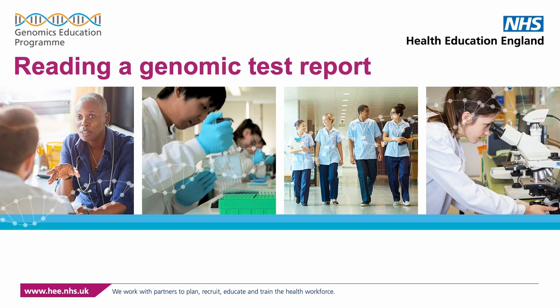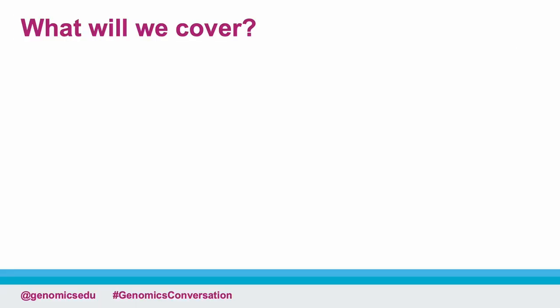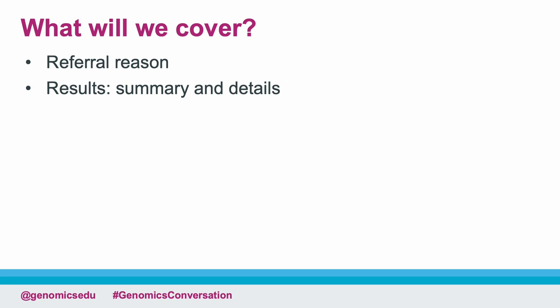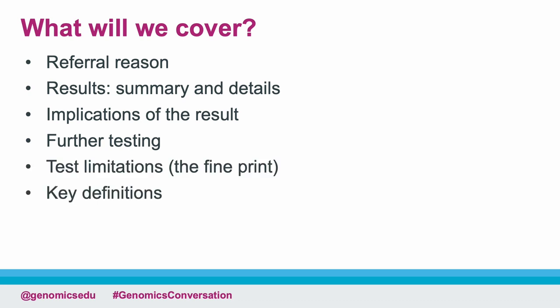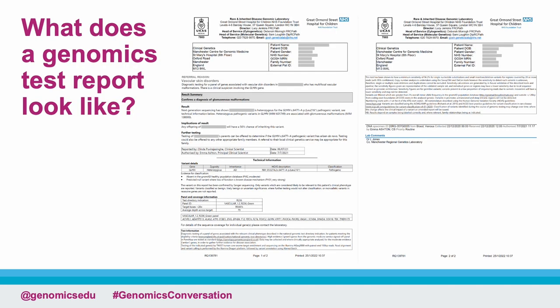Welcome to this tutorial on how to read a genomic test report. We will cover the structure of the report, which summarises the referral reason and provides the genomic test result itself, before explaining its implications, further testing the lab recommends, and test limitations noted on the report. We will also briefly define more technical terms you may see in the report, including the RNA transcript and genome build.